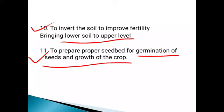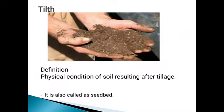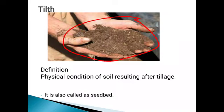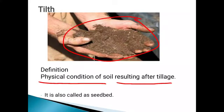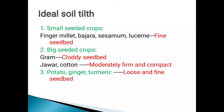Next is tilth. Tilth is the physical condition of the soil resulting after tillage. It is also called the seedbed. Ideal soil tilth refers to the desired condition of soil after tillage operations.